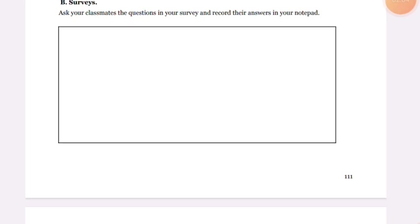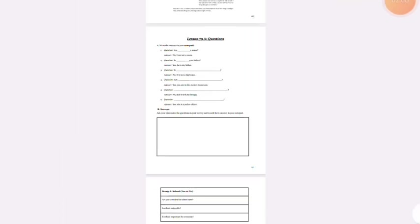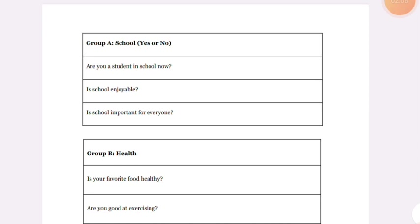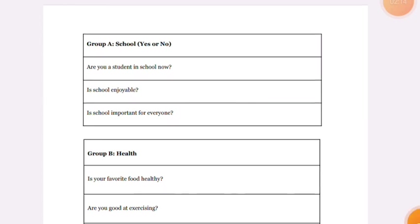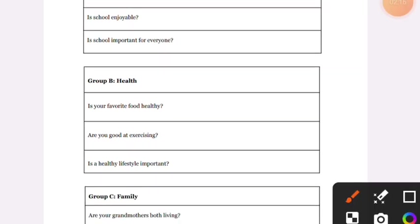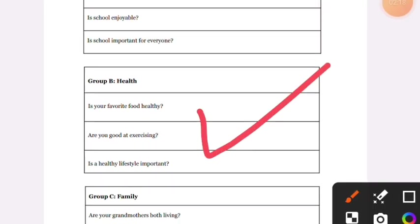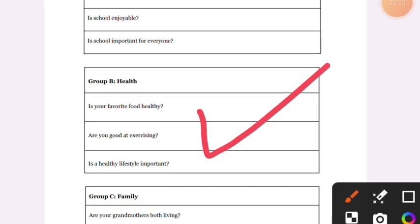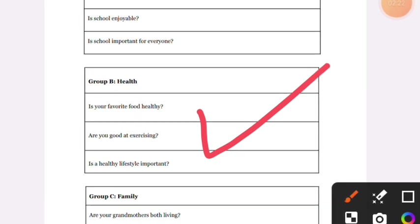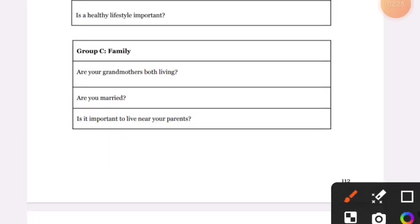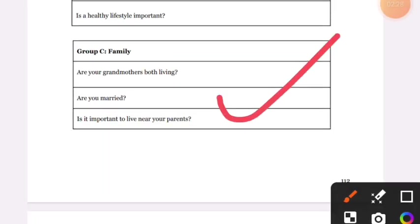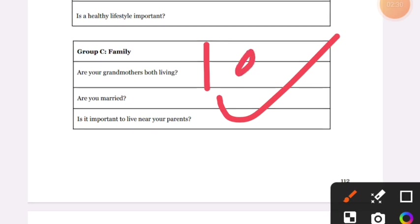You are going to ask questions. The first group will ask questions like: Is your favorite food healthy? Like this you are going to ask questions. In Group C, there will be questions for 10 people as well.